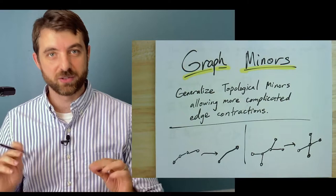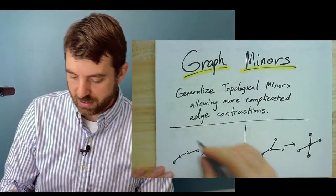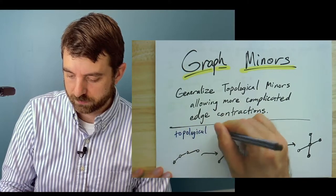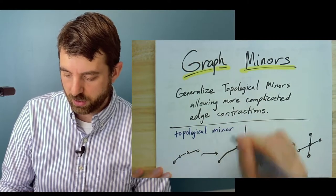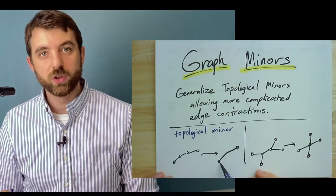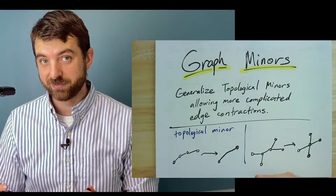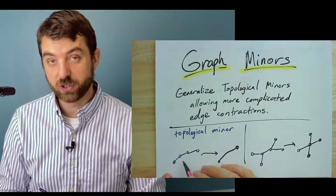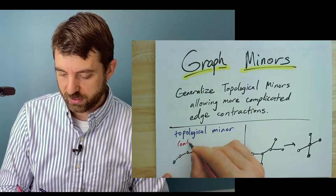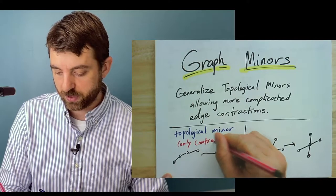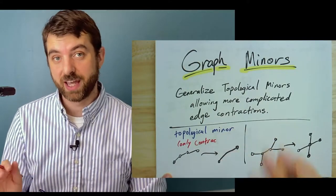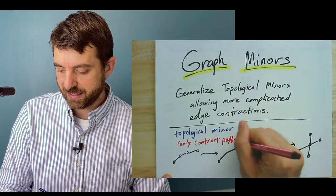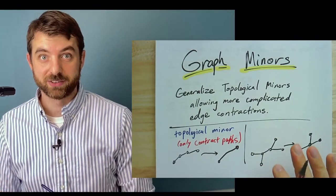Here is one way to enter into the world of graph minors, is to first think about this idea of topological minors, where, if you recall, we looked for a subgraph that was a subdivision of our graph. And so you could look at it in terms of contractions by only contracting paths to edges. You can contract a path to an edge as long as that edge is not already in the graph. So we only contract paths, and that gave us topological minors.